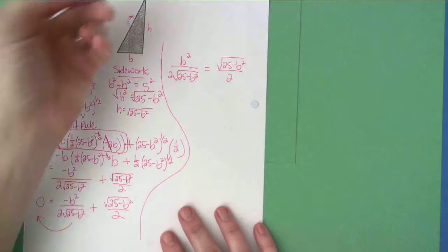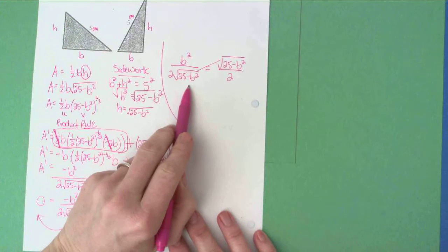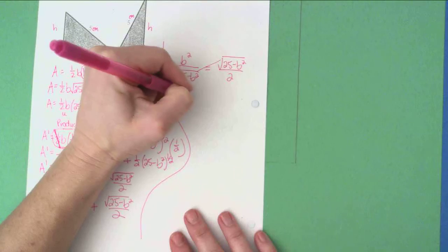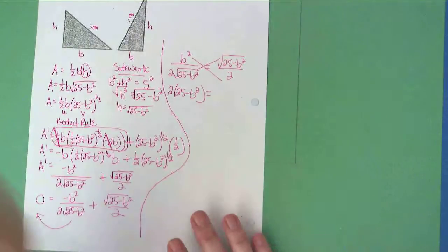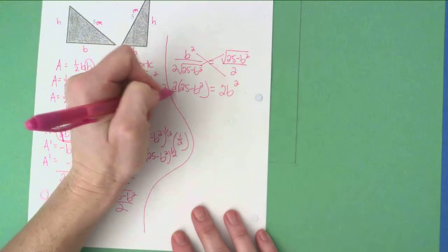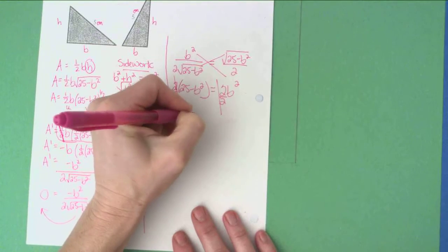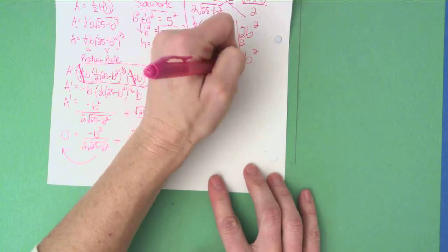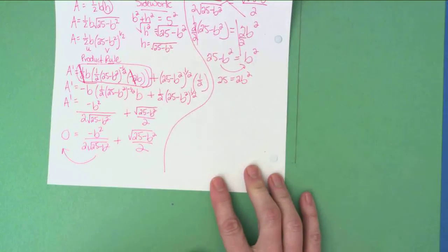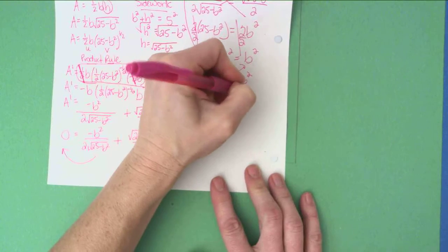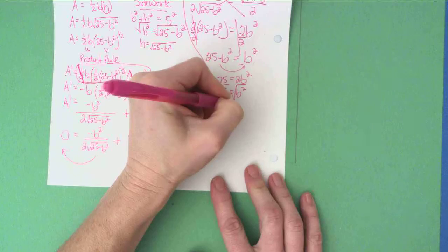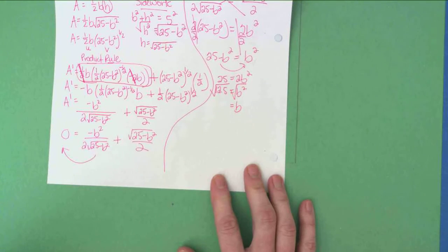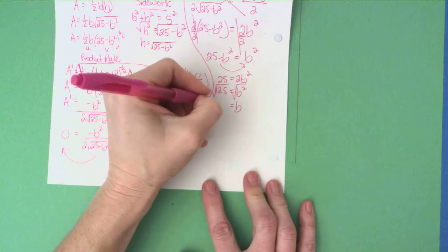Cross-multiplication gives me 2 times the square root of 25 minus b squared times the square root of 25 minus b squared on the left — the two roots cancel, giving 2 times 25 minus b squared — and 2 times b squared on the right. Dividing both sides by 2 gives 25 minus b squared equals b squared. Adding b squared to both sides: 25 equals 2b squared. Dividing by 2: 12.5 equals b squared. Taking the square root — discarding the negative since a base length must be positive — b equals the square root of 12.5, which is approximately 3.536 centimeters.